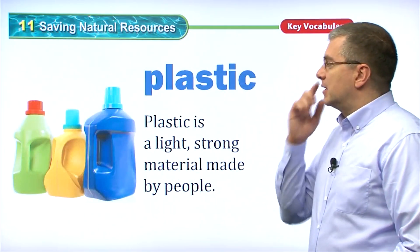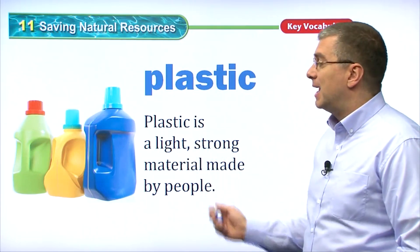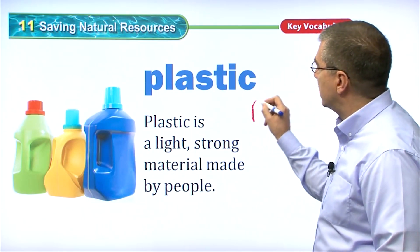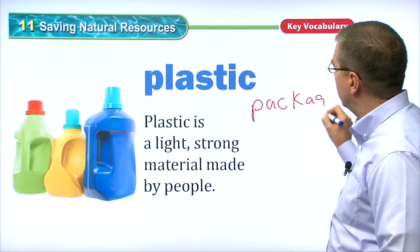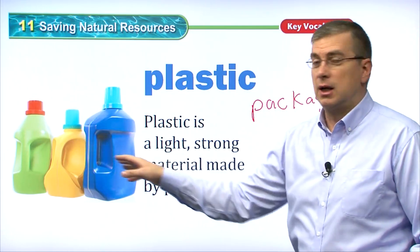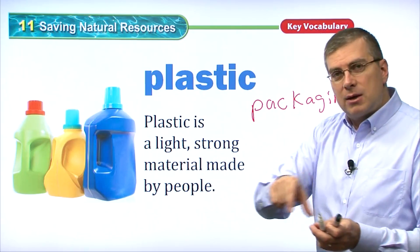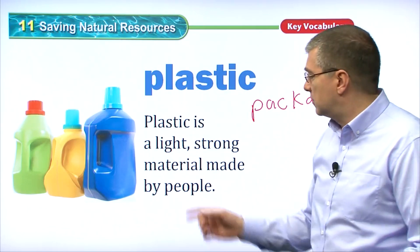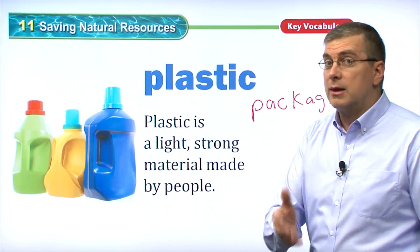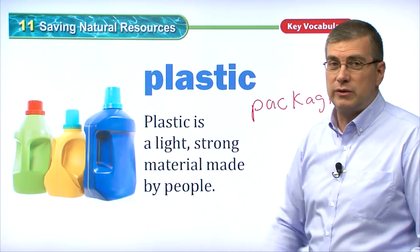Plastic is one of the things we can recycle. Plastic is a light, strong material made by people. It's light, meaning you can pick it up easily — it's not heavy, so it's convenient for packaging. Plastic is used in packaging, like detergent bottles or cookie trays. People can make many different shapes out of plastic. However, the problem is that if we throw plastic away, it stays in the land for a very long time — so we need to recycle or reuse it.